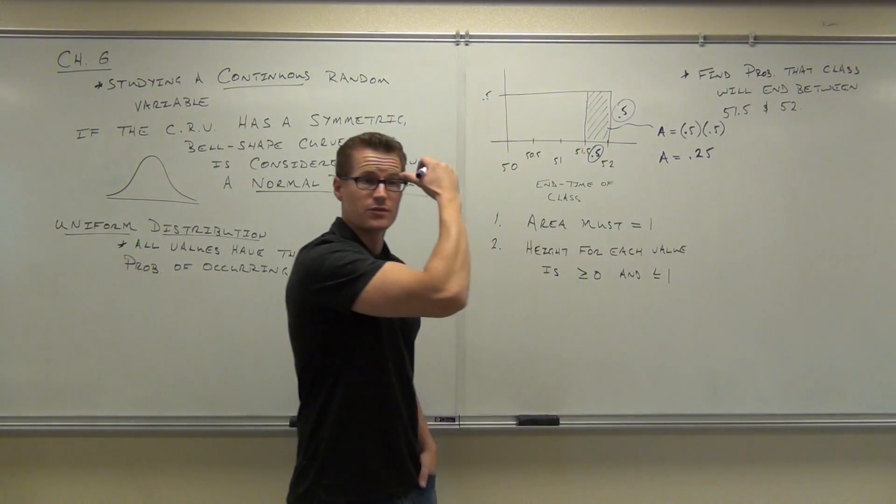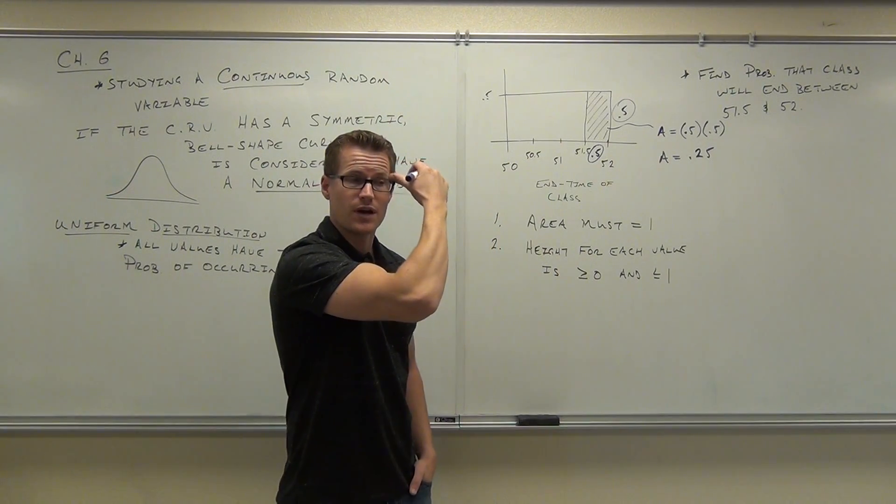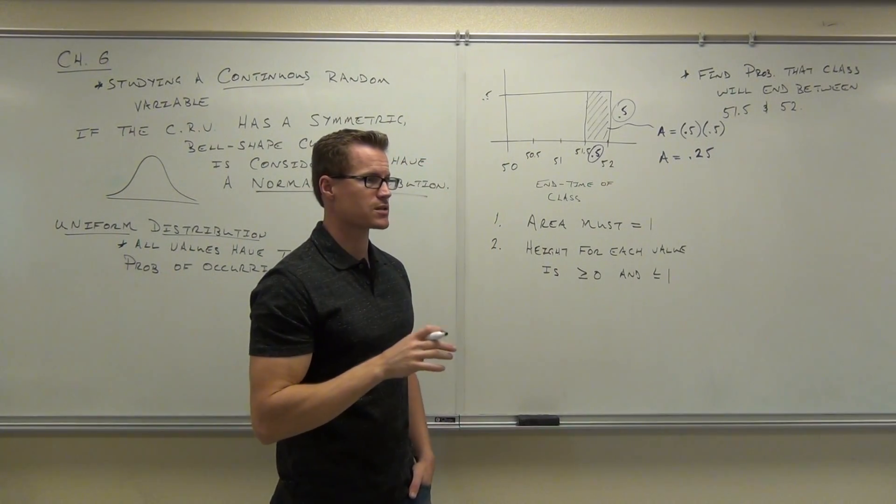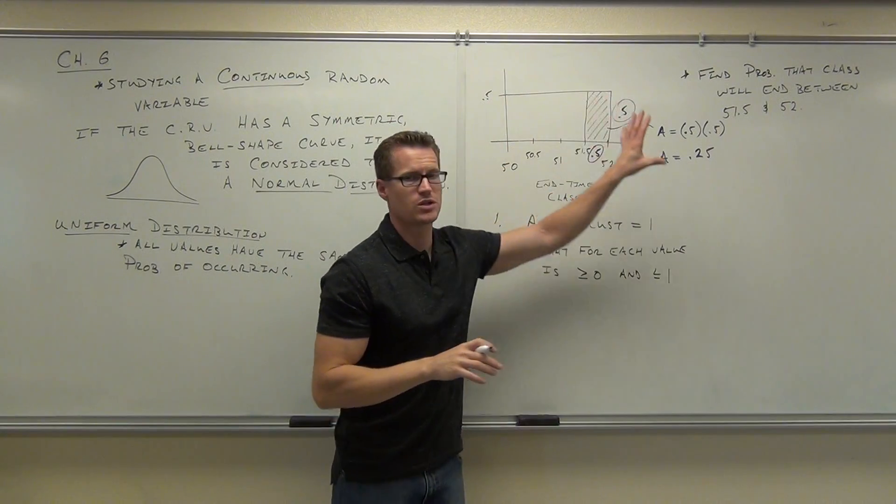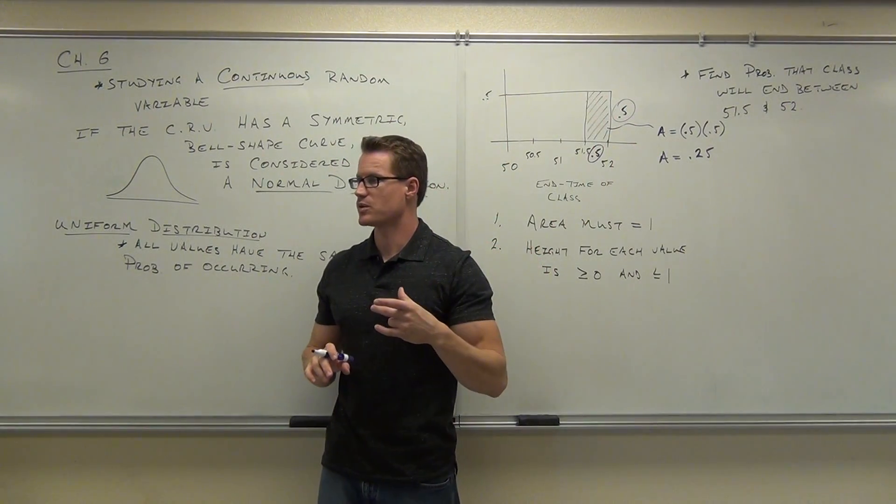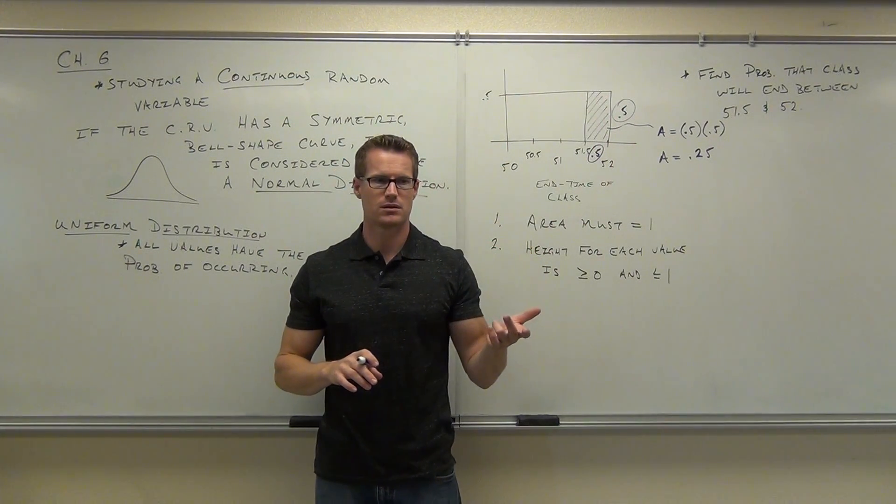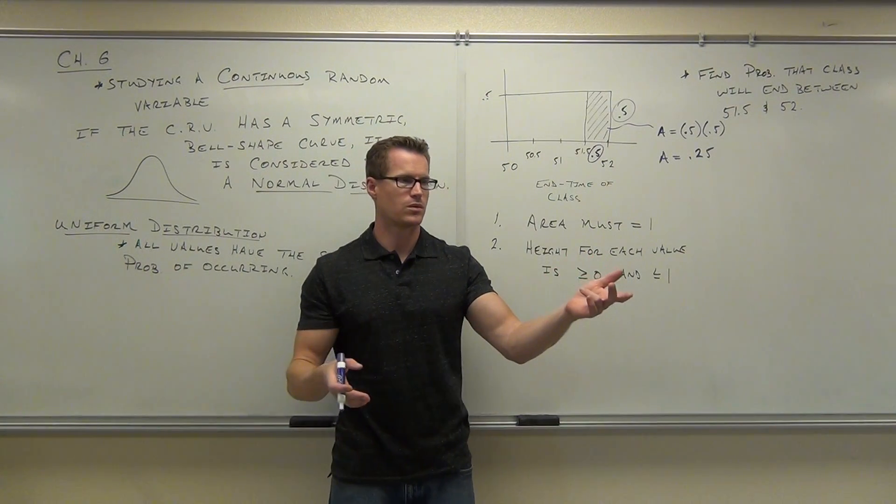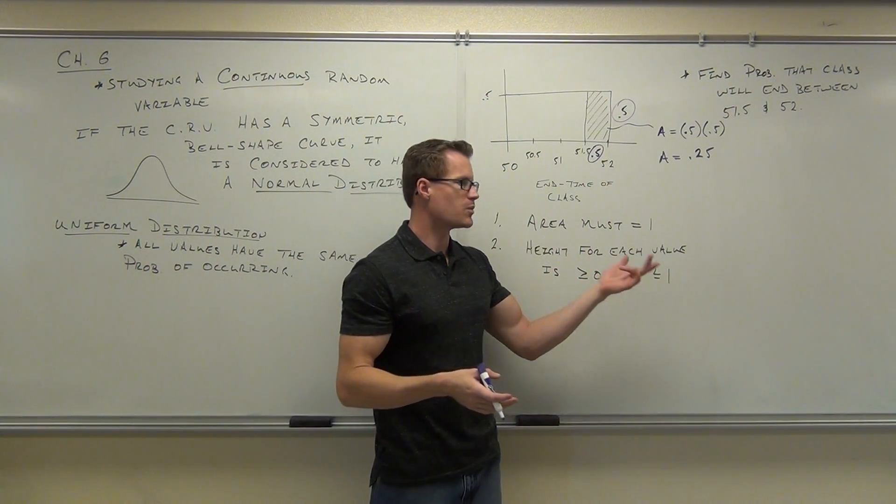I want you to think about what 0.25 means. 0.25 is an area, true. But because the area of the whole entire distribution equals 1, 0.25 is also a percent or a probability. That's a probability.